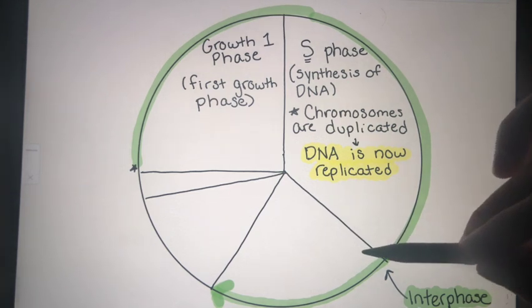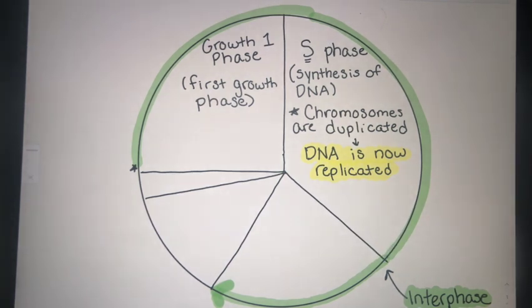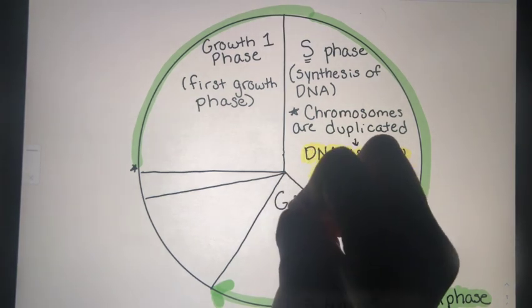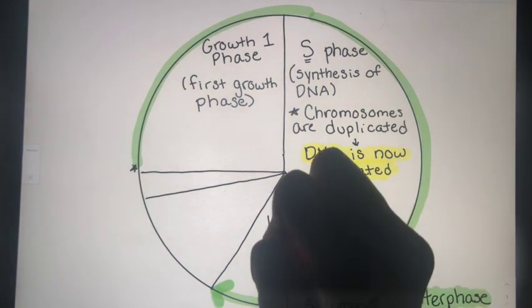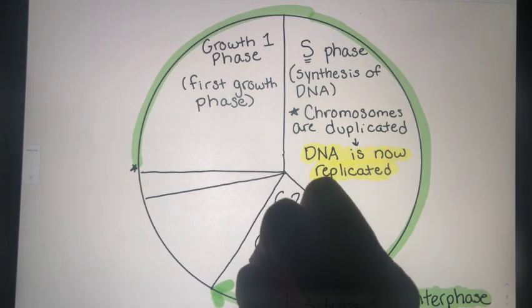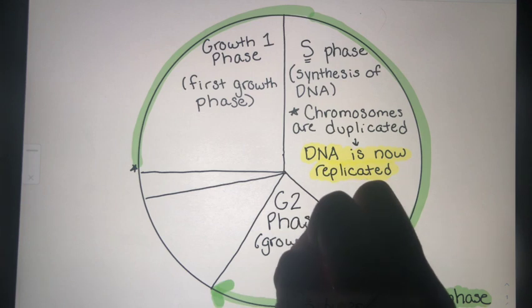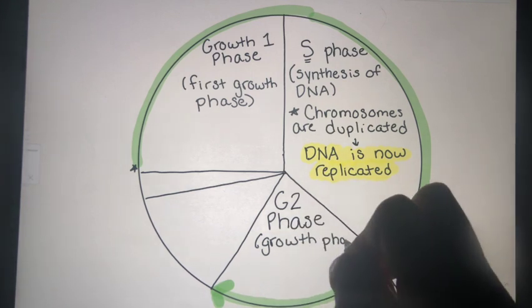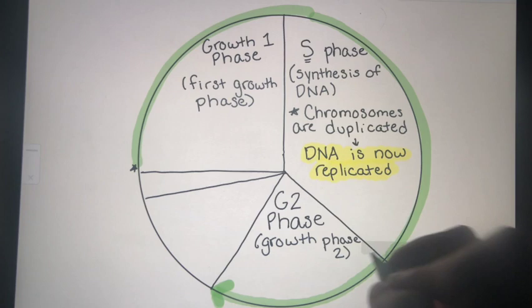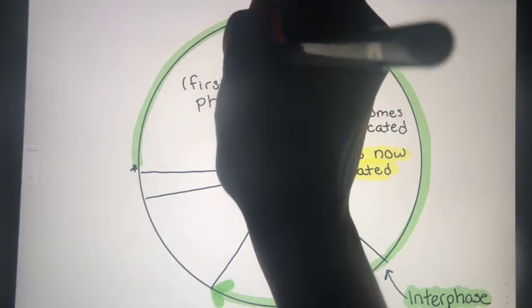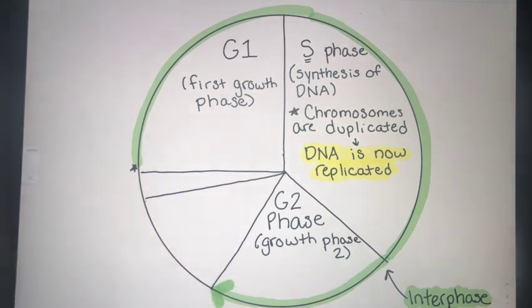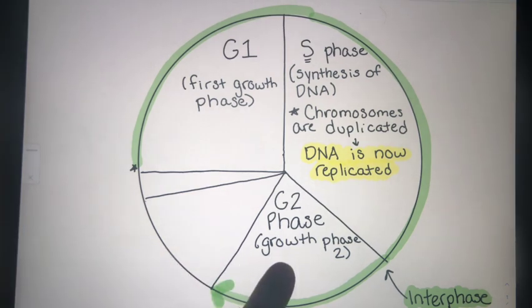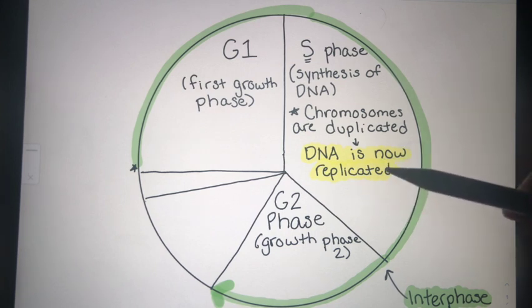We're not quite ready to divide just yet. We still have another step in interphase, and that is growth phase two, or G2. This top one is oftentimes going to be called G1, and then the bottom one is going to be G2. Here, your cell is making sure that the DNA has been replicated correctly. There are no errors here, and it's still going to do its own cell things.